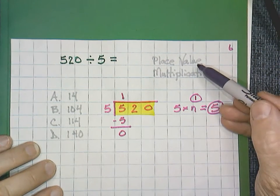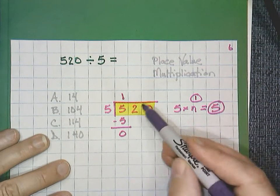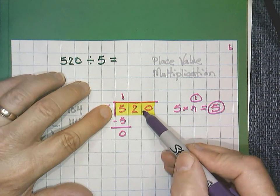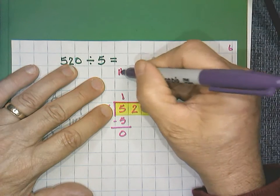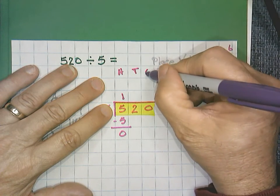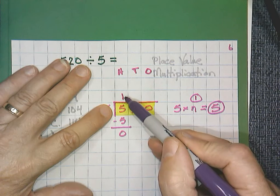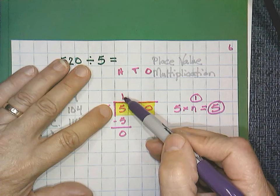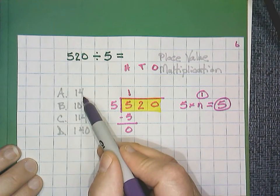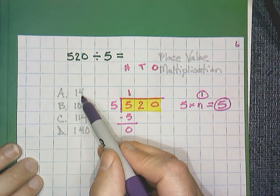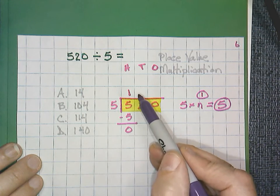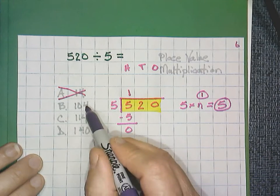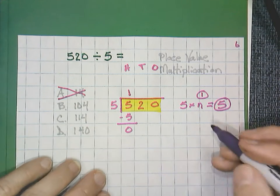Now, remember we said we want to keep an eye on our place value. Remember that our dividend has three place values. It's a three-digit number. I'm going to write that up here. It's hundreds, tens, and ones. Notice that this one is in the hundreds place value. Now, that's important because look over here. 14 is only a two-digit answer. Our answer must have three digits. So we can eliminate A immediately. We know it's going to be one of these three. Okay, let's move on.